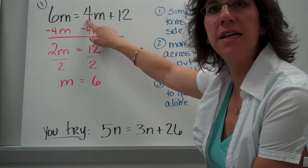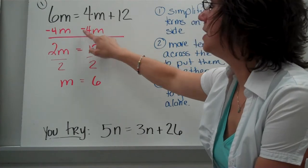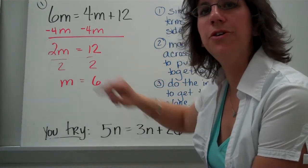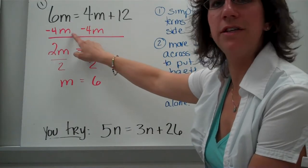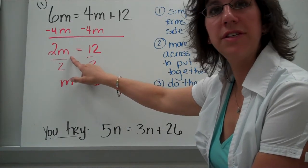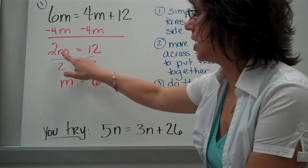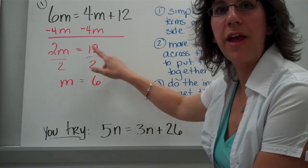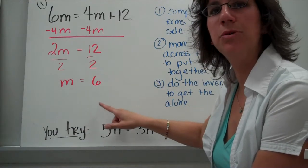So the opposite of positive 4M — let's do the inverse — negative 4M. Every time you cross the equal sign, you're going to do the inverse. So we've got 6M minus 4M. And now this is just like those one-step equations. 2 times what equals 12? Well, the opposite of multiplying is dividing. M equals 6.